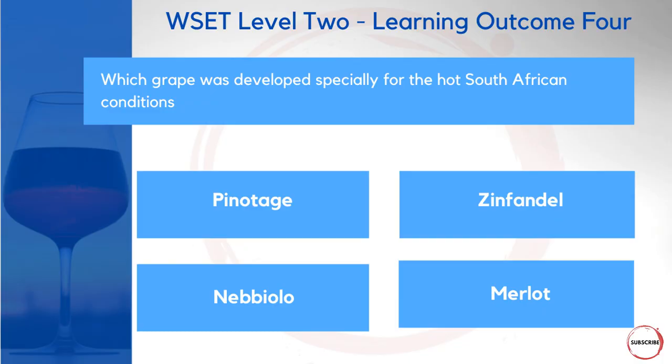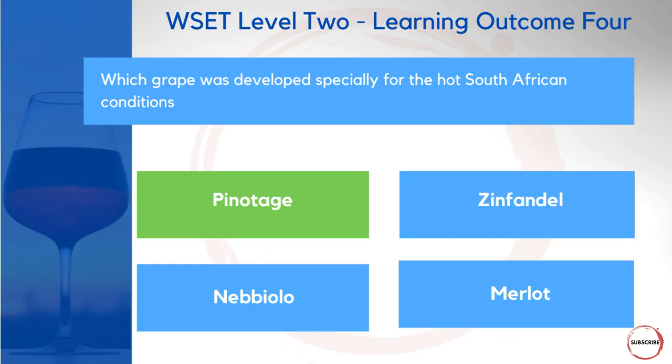When thinking about characteristics, we may also start to think about where some of those grapes are grown — what suits a warmer climate versus a cooler climate. Which grape was developed especially for the hot South African conditions? Was it Pinotage, Zinfandel, Nebbiolo, or Merlot? Pinotage, in the context of WSET Level 2, very much focuses on South Africa. It was created especially in the 20th century for that market.